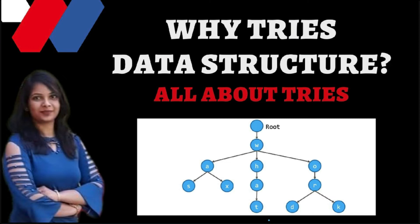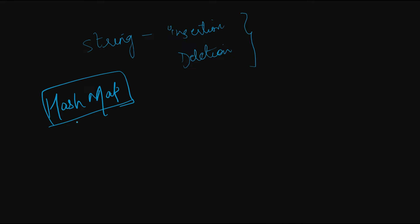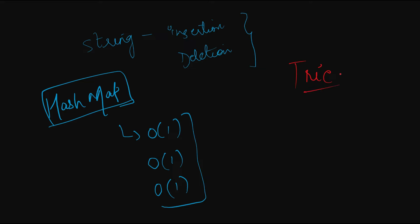We need tries for storing strings and optimally accessing strings. Let's compare tries first with other data structures used to solve string problems. The first thing that comes to mind is a hash map. With a hash map, we can do insertion in O(1), deletion in O(1), and searching in O(1). So how is a trie better, and in what cases should we use tries?